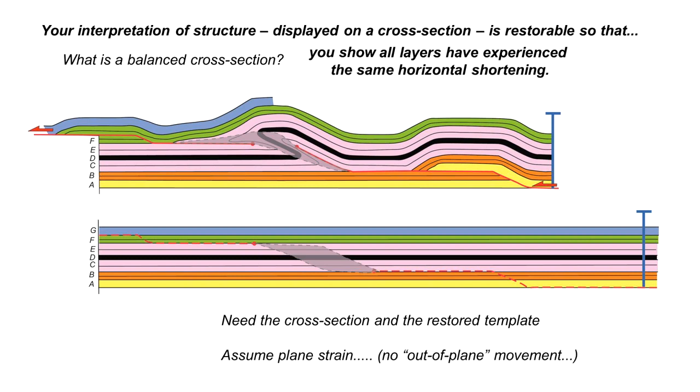Throughout this we're assuming plane strain. In other words all the action is happening in the plane that we've drawn the cross-section. There's no out of plane movement.